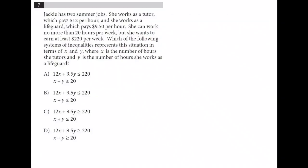Number 7, Jackie has two summer jobs. She works as a tutor, which pays $12 per hour. And she works as a lifeguard, which pays $9.50 per hour. She can work no more than 20 hours per week, but she wants to earn at least $220 per week. Which of the following systems of inequalities represents this situation in terms of x and y, where x is the number of hours she tutors and y is the number of hours she works as a lifeguard?